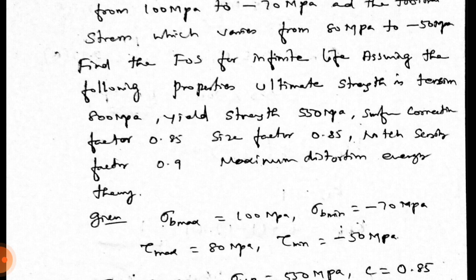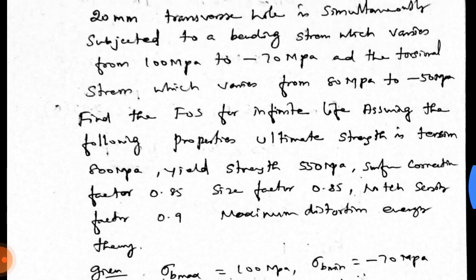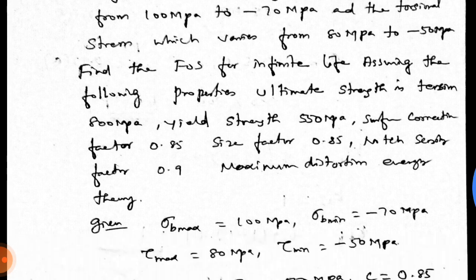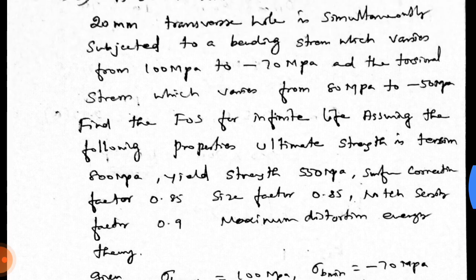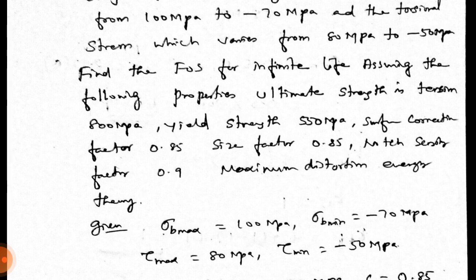First, we have the data. This is the various bending stresses and torsional stress range. Sigma B max, bending stress is bending. Sigma B max is plus value, 100 MPa. Sigma B minimum is minus 70 MPa.